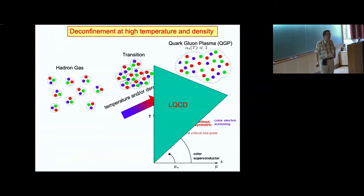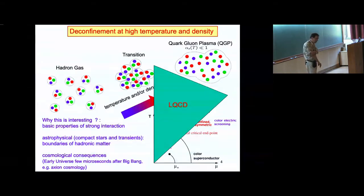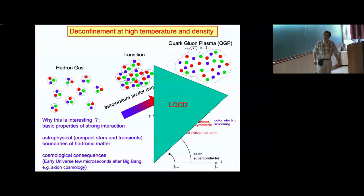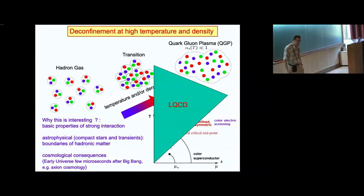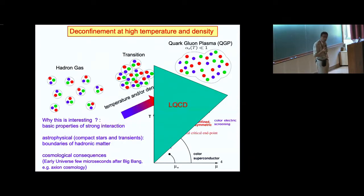It's essentially this diagonal piece of the phase diagram that lattice QCD can explore. Studying matter in extreme conditions tells us about basic properties of strong interaction such as confinement and chiral symmetry restoration, the potential consequences for compact stars and binaries, and also cosmological consequences in the early universe. One example is axion cosmology — if you think of axions as dark matter candidates, their abundances turn out to be influenced by QCD physics, namely by QCD topological susceptibility.